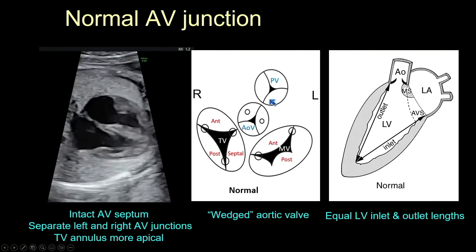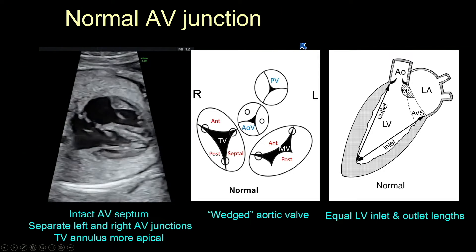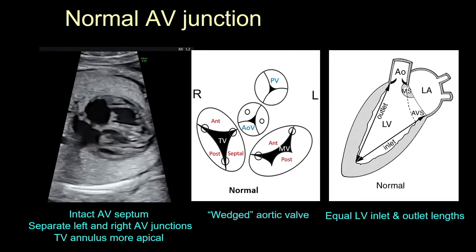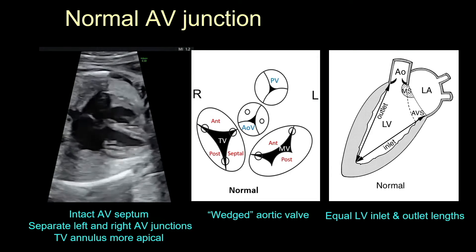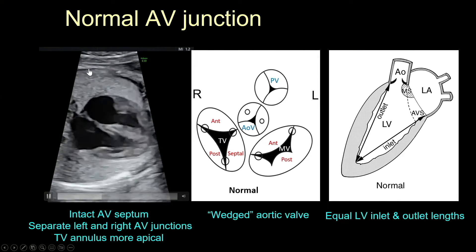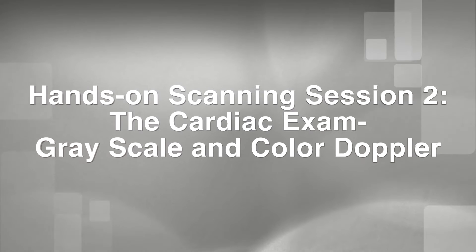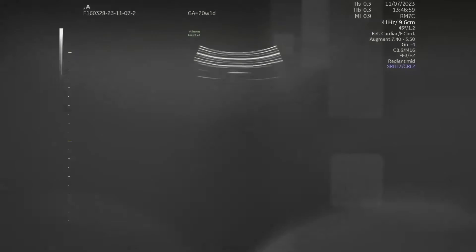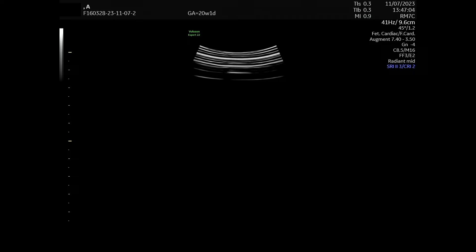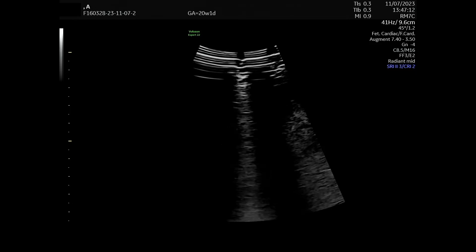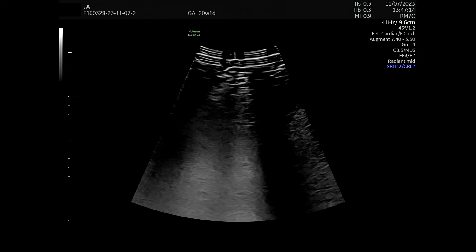One thing we always discuss when looking at four-chamber views is heart axis and heart size, but we never mention the relationship of the atrial septal length. We're going to do a hands-on presentation on the GE Expert 22, a new system, scanning a model at about 20 weeks. I'll be scanning behind the curtain with the microphone on, and I'll give you tips on how I perform the ultrasound examination of the heart.